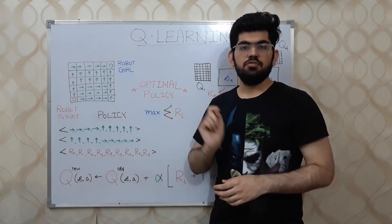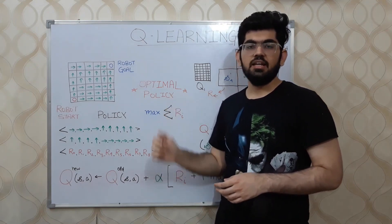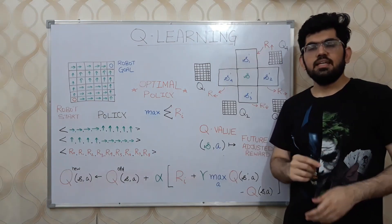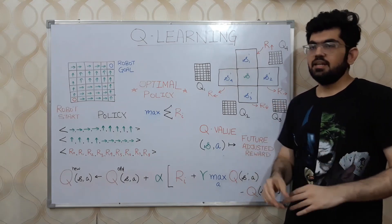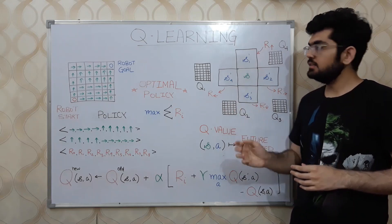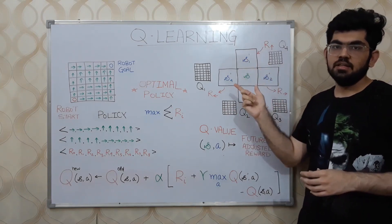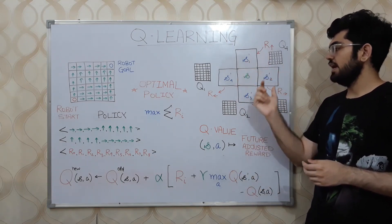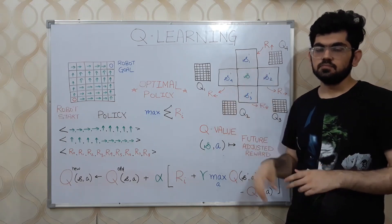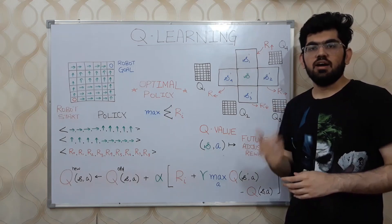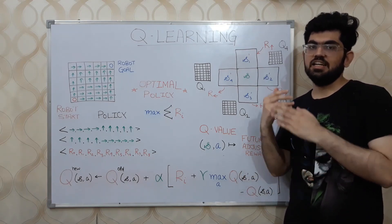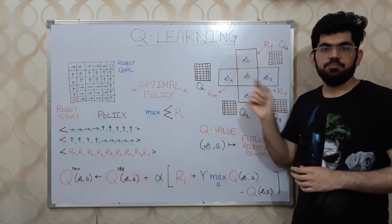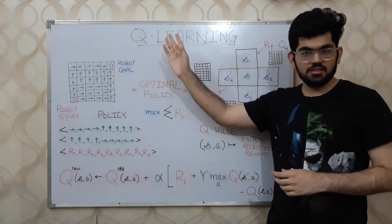The objective of the reinforcement learning algorithm is to find an optimal policy. Let's see how Q-learning finds this optimal policy. Let's say our robot is at a current state S and it can take the following actions — up, right, down, or left — to go to the corresponding next states S-1, S-2, S-3, and S-4. There also exist different reward values that the robot obtains based on the action it takes: R_up, R_right, R_down, and R_left.